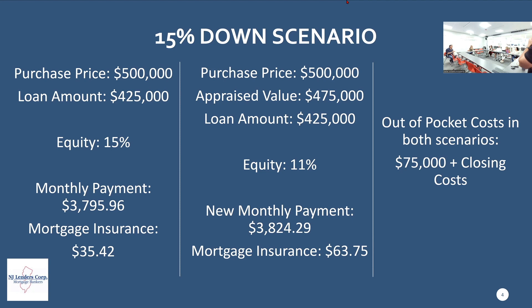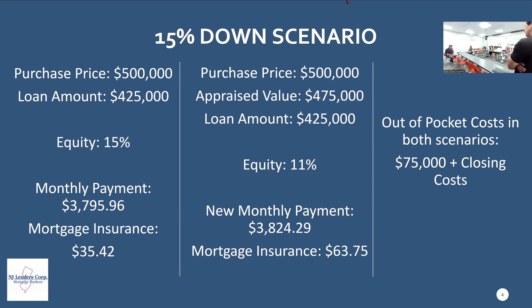You have to have the right lender — a lender willing to speak to the listing agent and help them understand your buyer's strength. You also need a lender that can help your client understand the payment difference if the house under-appraises. You may not discuss this when you present the offer and then get a call from the listing agent asking if your client will waive the appraisal — and you haven't discussed it yet. That's why these conversations need to happen before submitting the offer.